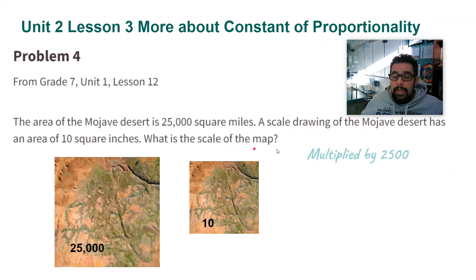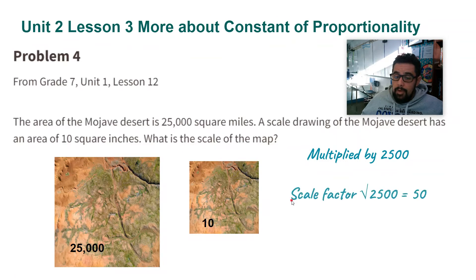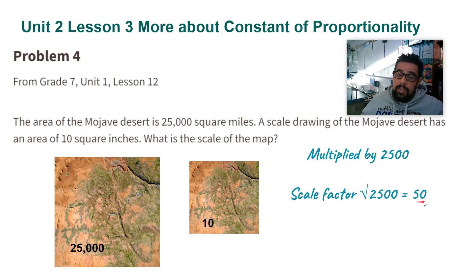First thing to note is that the area is multiplied by 2,500 to get the area of the actual desert from the drawing. Remember, when you're doing scaling and scale factors with area, the area ratio is not the scale factor. So the scale factor is going to be the square root of 2,500, which is 50. 50 times 50 is 2,500 — so this number when talking about areas is not the scale.